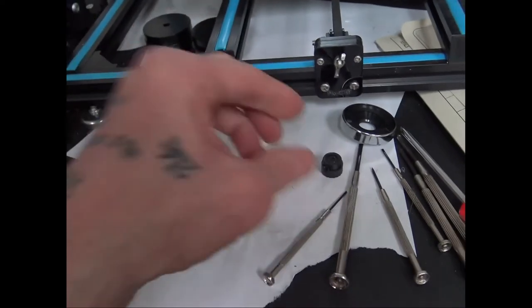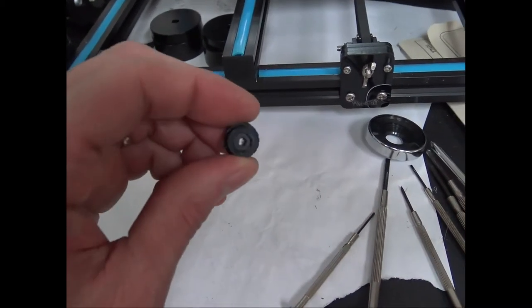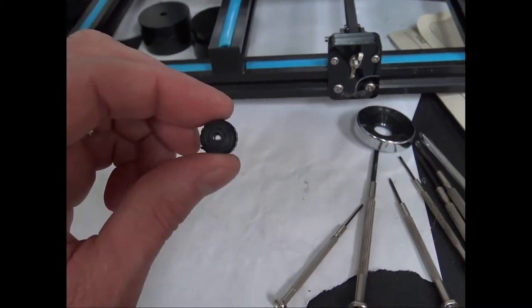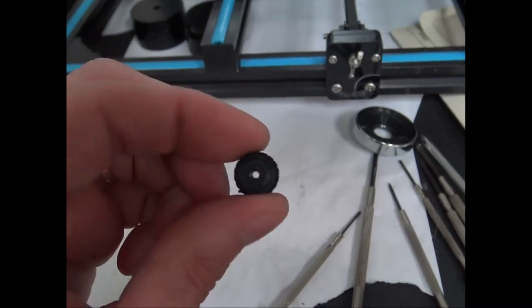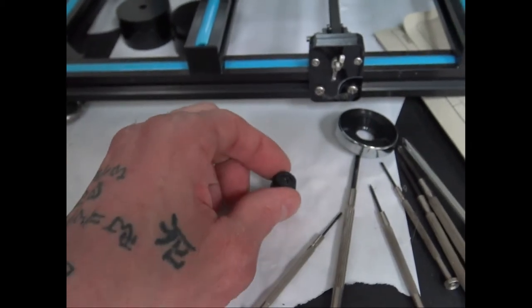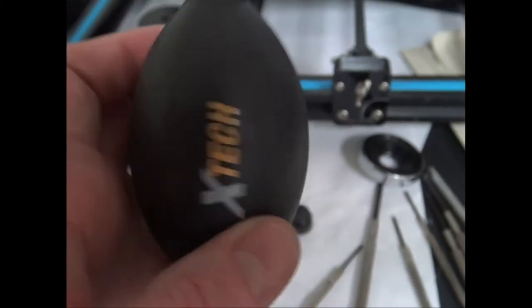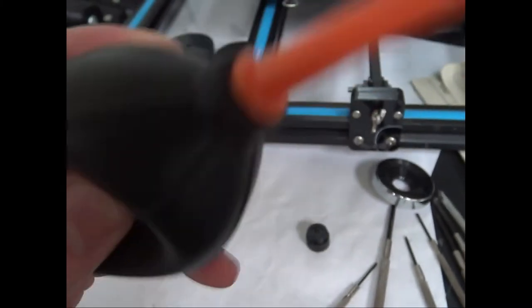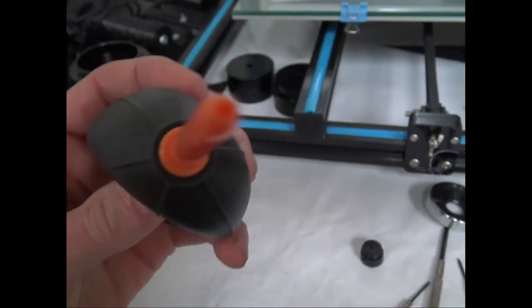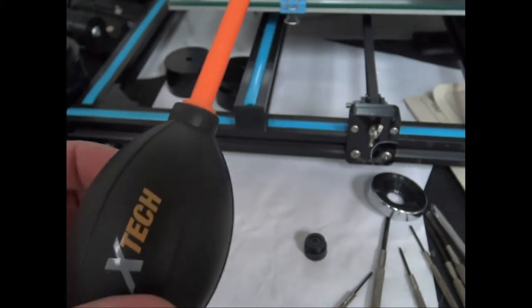Once you pry it out, that's it right there. Just discard it wherever you want to put it. This is what it looks like afterwards. There's a little lens in there, probably plastic - I doubt it's glass.